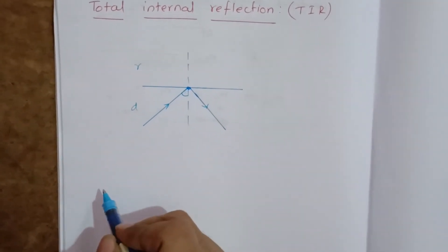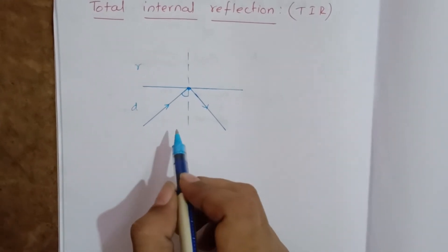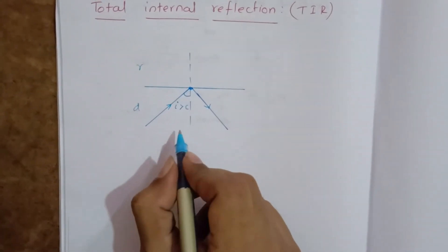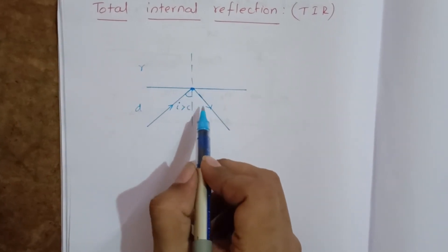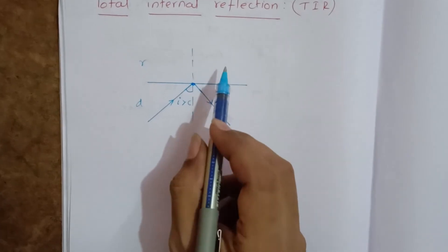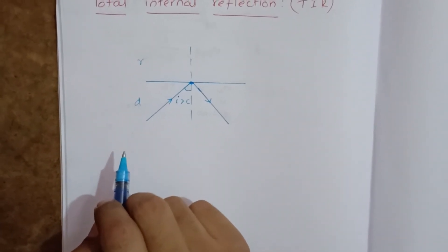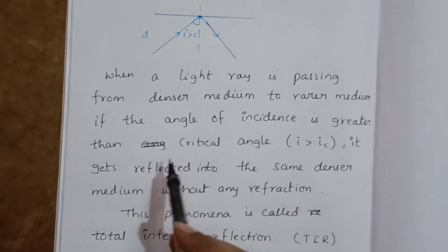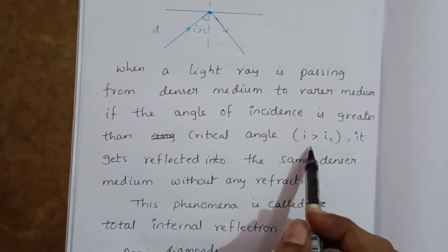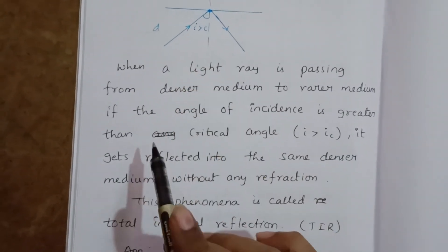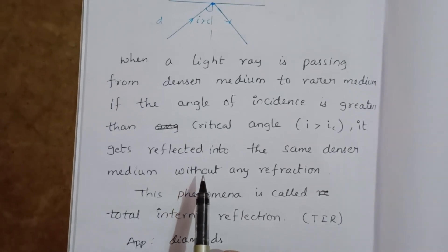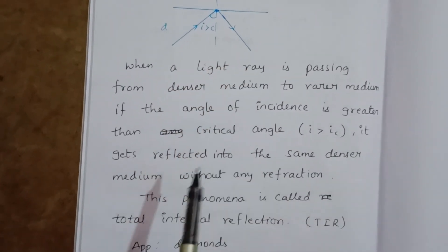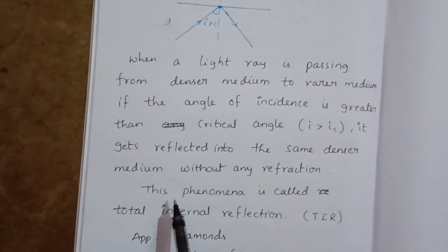When a light ray travels from a denser medium to a rarer medium and the angle of incidence is greater than the critical angle, the light ray is reflected back into the same denser medium without any refraction. This phenomenon is called total internal reflection.